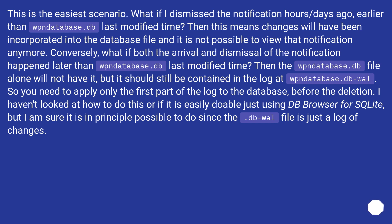What if I dismissed the notification hours or days ago — earlier than the wpndatabase.db-wal file's last modified time? Then changes will have been incorporated into the database file and it is not possible to view that notification anymore. Conversely, what if both the arrival and dismissal of the notification happened later than the wpndatabase.db-wal last modified time? Then the wal file alone will not have it, but it should still be contained in the log. So you need to apply only the first part of the log to the database before the deletion. I haven't looked at how to do this, or if it is easily doable just using DB Browser for SQLite, but I am sure it is in principle possible since the .db-wal file is just a log of changes.